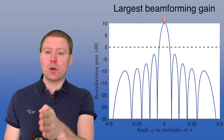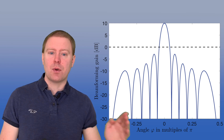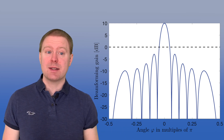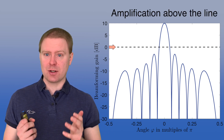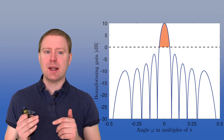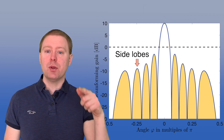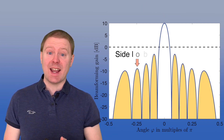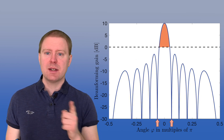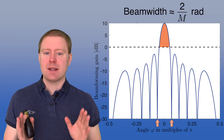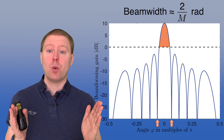The signal is sent to a user right in front of the array in the broadside direction, and we can see the beamforming gain for different angles. All angles above the horizontal line represent amplification compared to an isotropic transmitter. There is a main beam and some side lobes with ripples but without amplification. The width of the main beam, measured from null to null, is roughly proportional to 2 divided by the number of antennas — so more antennas means a narrower beam.